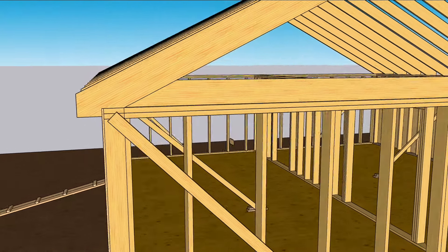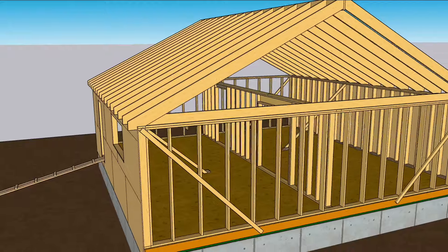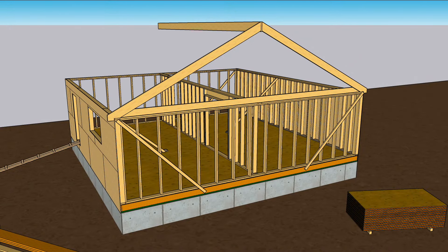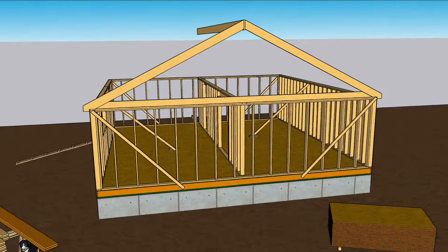For a simple regular gable roof, the rafters on the left side are identical to the rafters on the right. So it all boils down to laying out one rafter.